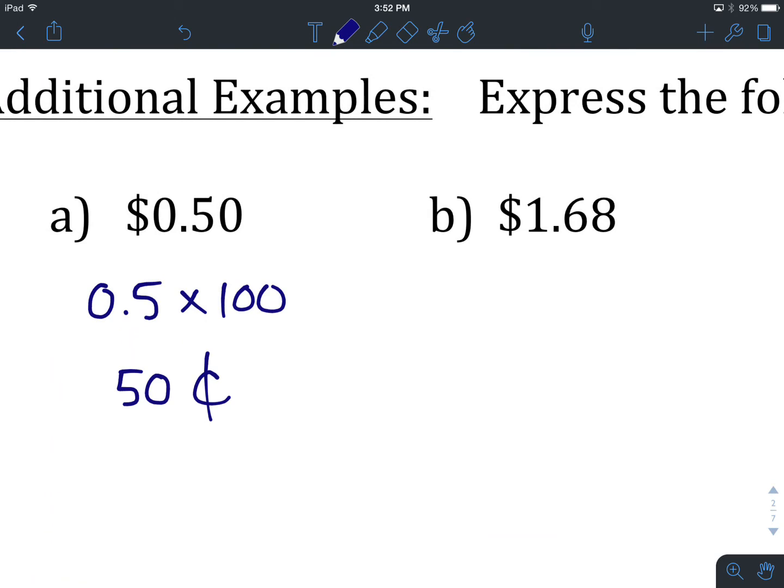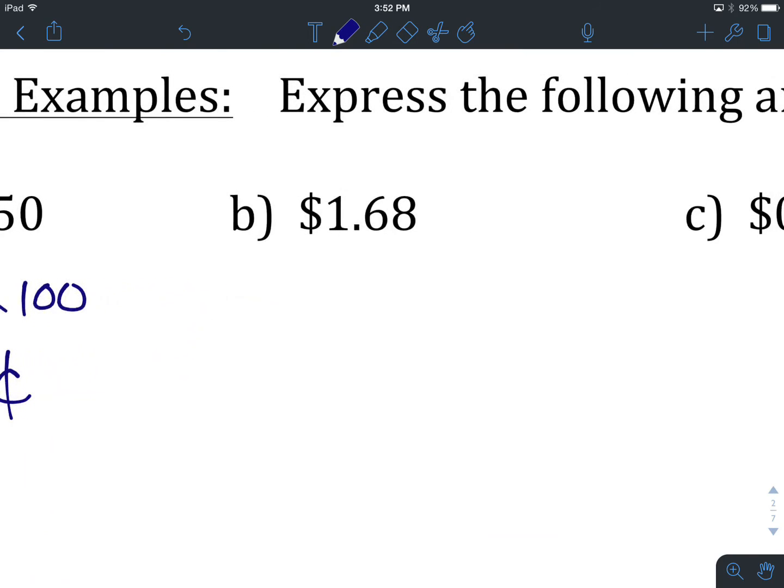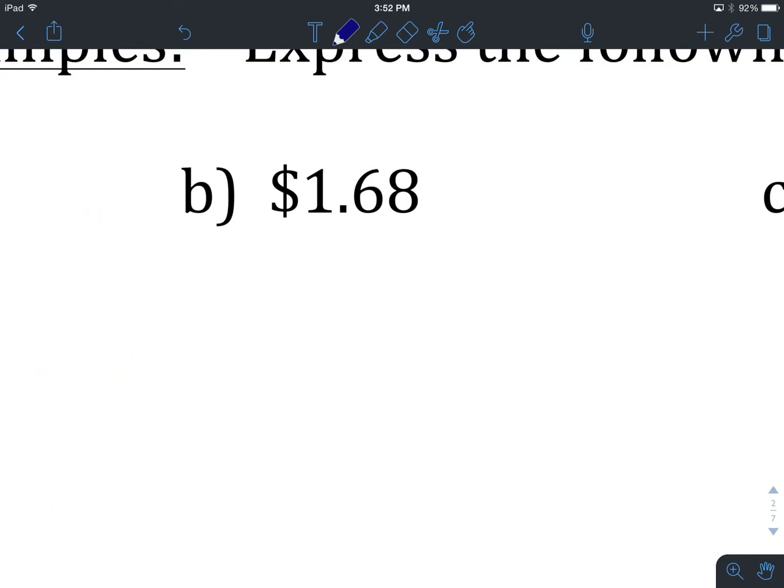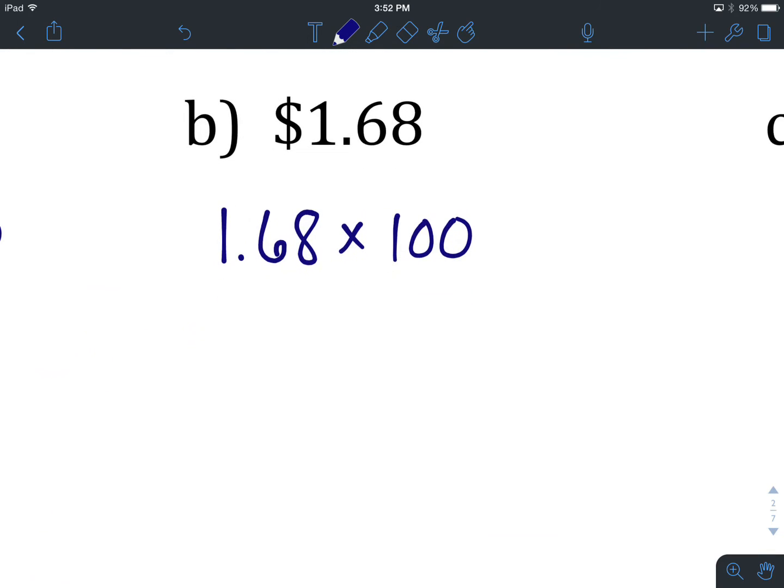Let's try one of these additional examples. If we have $0.50 and we're asked to express it in cents, we start by taking the amount in dollars, which is 0.50. We multiply it by 100 to turn it into cents, and that will give us 50 cents. Let's look at B. If we have $1.68, we take that amount, 1.68, multiply by 100, giving us 168 cents.